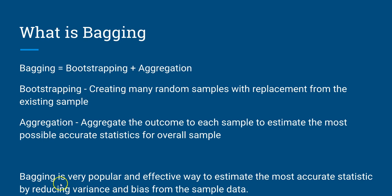Bagging is a very popular and effective way to estimate the most accurate statistics by reducing variance. It reduces variance and bias from the sample data because it does random sampling with replacement. If there is variance or bias in your training data, bagging reduces that and creates the most effective statistic that you can use on your live data to predict outcomes.